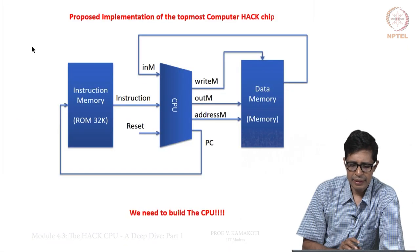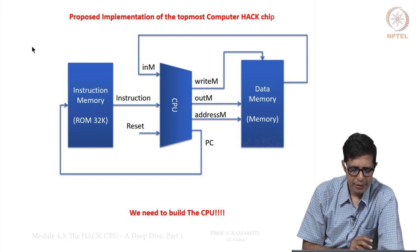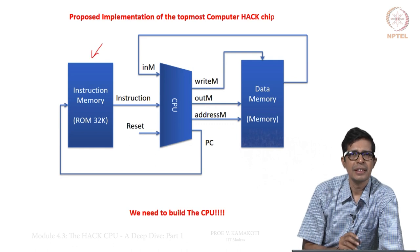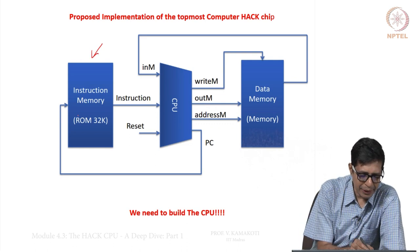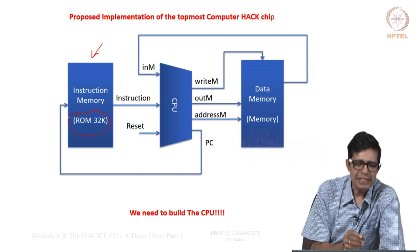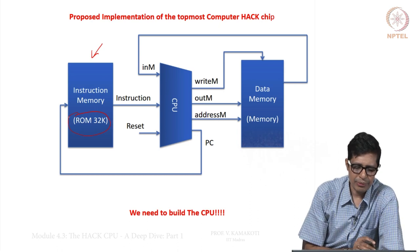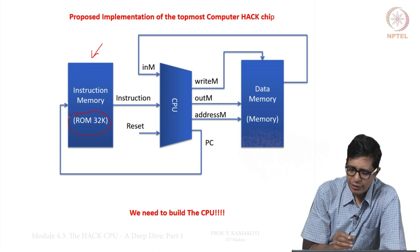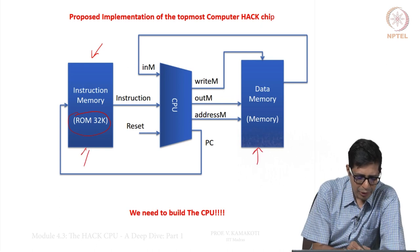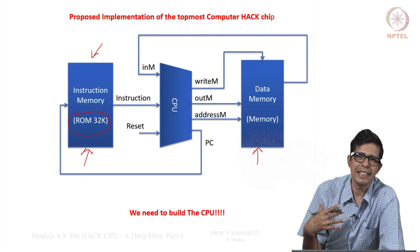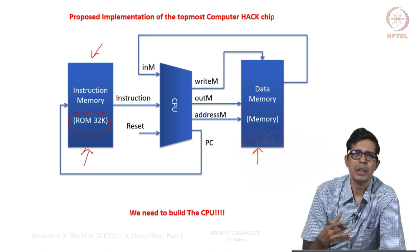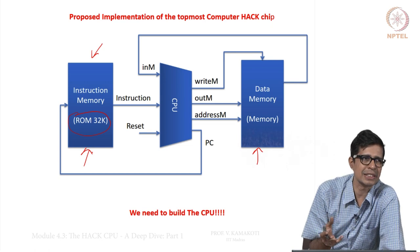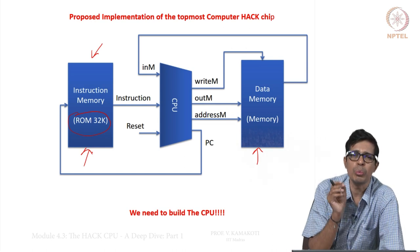This is the topmost view of the Hack computer. You see an instruction memory here — the instruction memory is a read-only memory. This is a built-in chip available for us; we have not built a read-only memory, it is already available. The CPU will not write into instruction memory; it basically reads the instruction memory and executes the instruction. That is why instruction memory is a read-only memory.